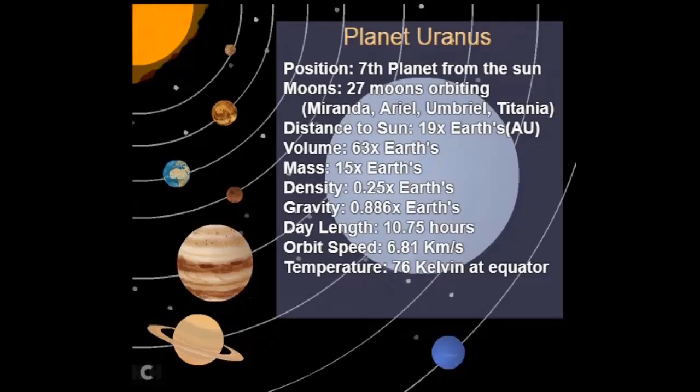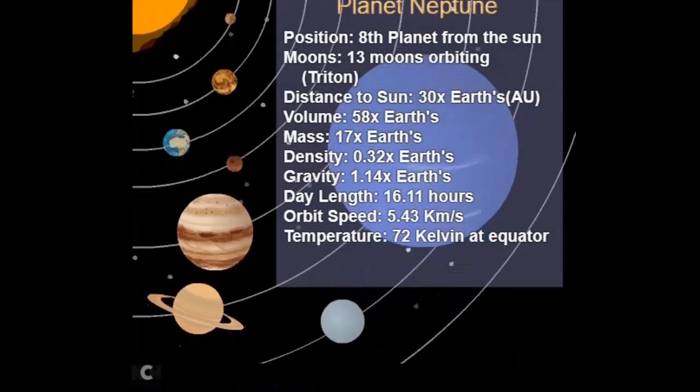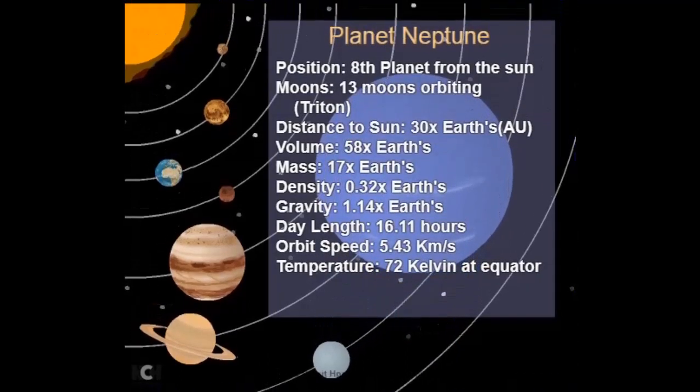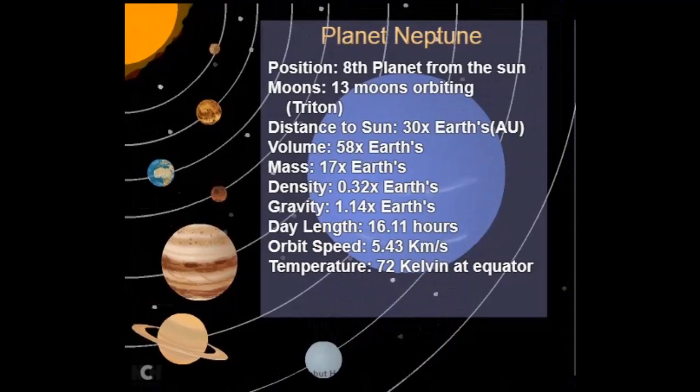One of the outer planets, Saturn, has a density only 0.7 times that of water, which means that Saturn would float if placed in a large enough water tank.